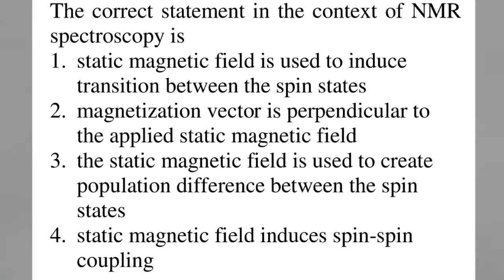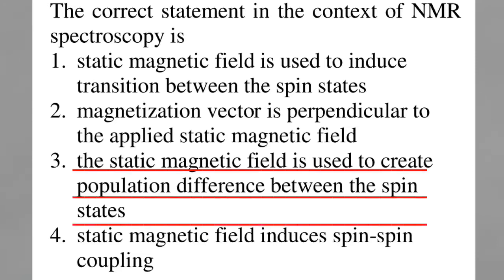Third question. The correct statement in the context of NMR spectroscopy is. Option C, which states that the static magnetic field is used to create population difference between the spin states, is the right answer.